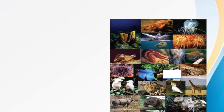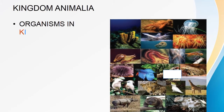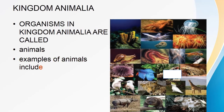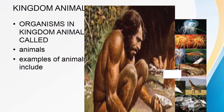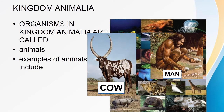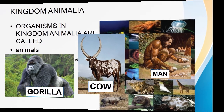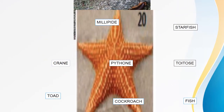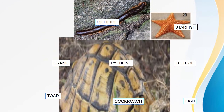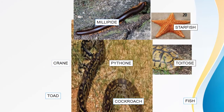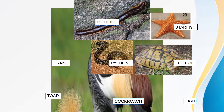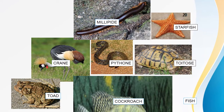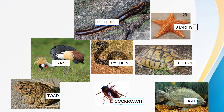Kingdom Animalia — organisms in this kingdom are called animals. Examples of animals include man, cow, gorilla, millipede, starfish, tortoise, python, crowned crane, toad, cockroach, fish, and others.